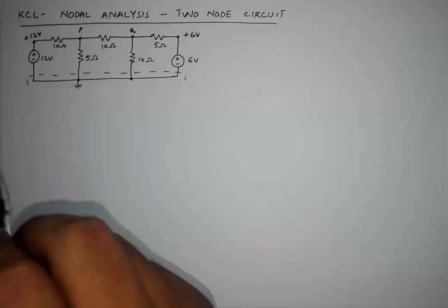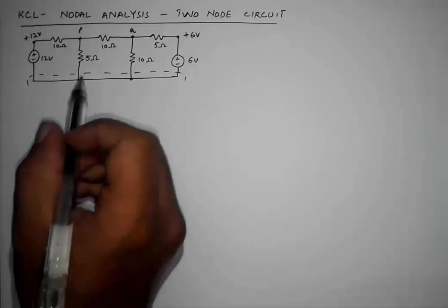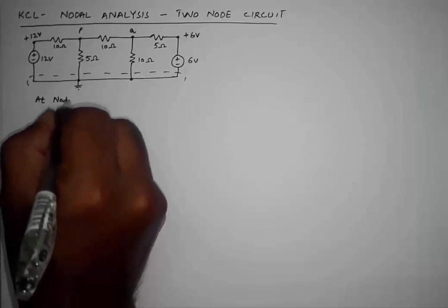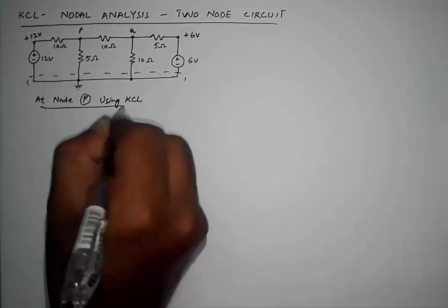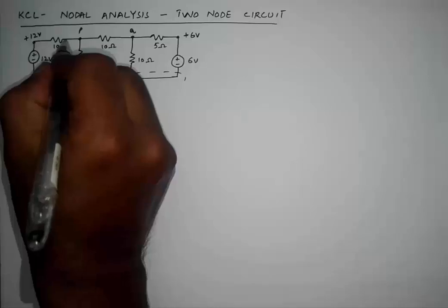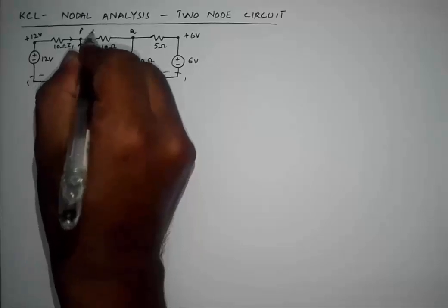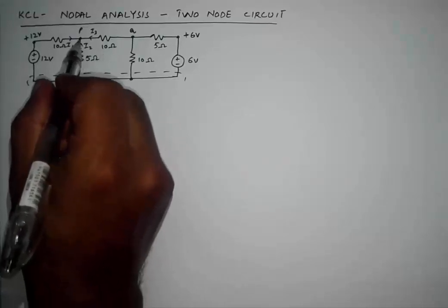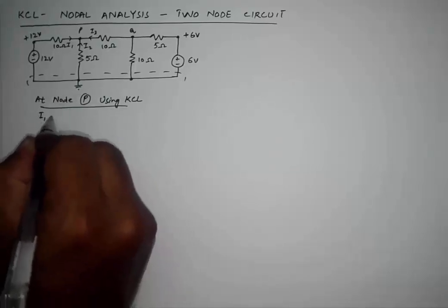For nodal analysis, we apply KCL at each and every node. At node P, the sum of all the currents is equal to zero. I will place three currents at this node and assume all currents are flowing into this node — the current direction is inward. KCL states that the sum of all the currents equals zero.